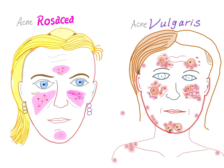Now let's go to the differences between them. First, acne vulgaris has what we call comedones, and there are two types: blackheads and whiteheads. But acne rosacea has no comedones. However, acne rosacea has telangiectasias — dilated blood vessels — which lead to flushing. There are no telangiectasias in acne vulgaris.